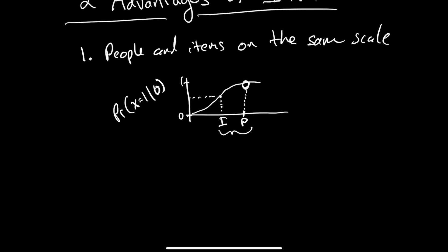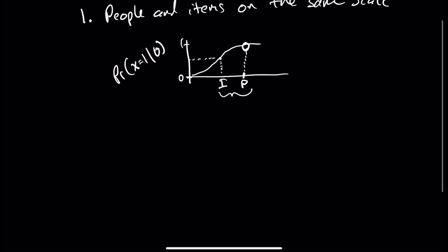The second major advantage of item response theory is that it is very mathematically rigorous and flexible.